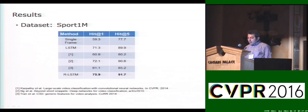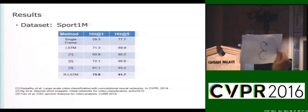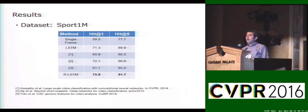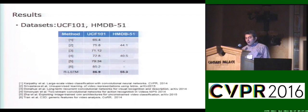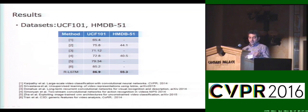We have improved results on three benchmark datasets. Sports 1M is the largest available dataset for action classification, and we improved accuracy by 3.3%. On two other datasets, UCF101 and HMDB51, we improved even more because the overlap of action classes with the 3D skeleton data is much greater.